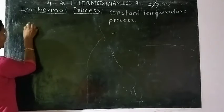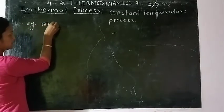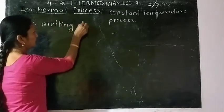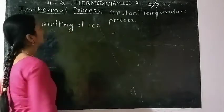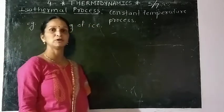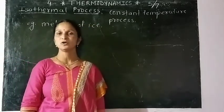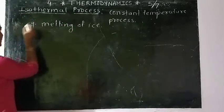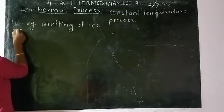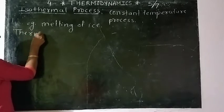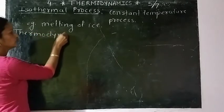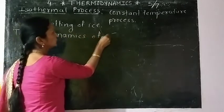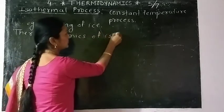For example, melting of ice is an isothermal process because it takes place at constant temperature. Now we will see what is the thermodynamics of the isothermal process.